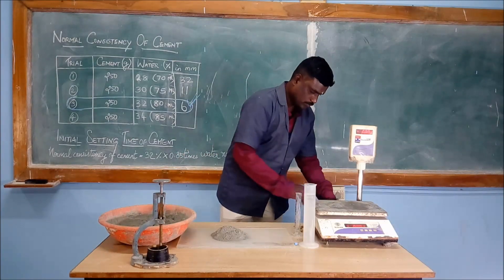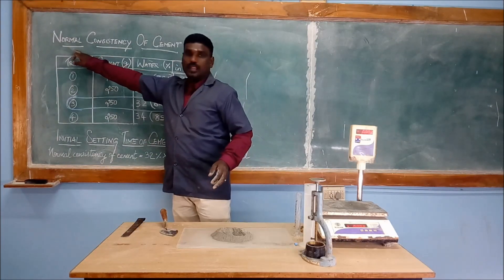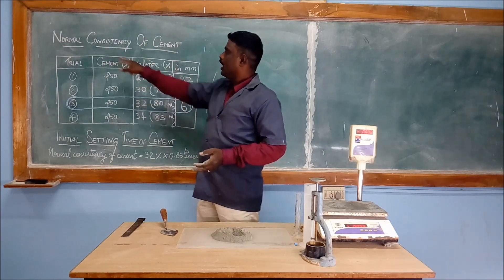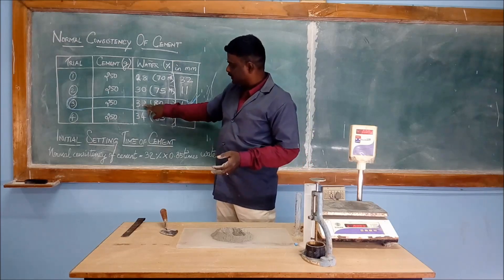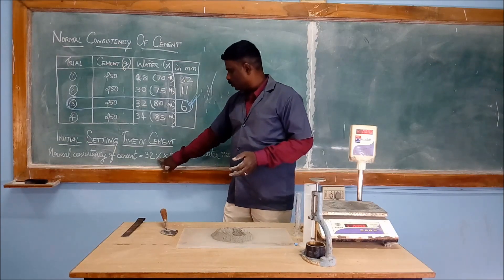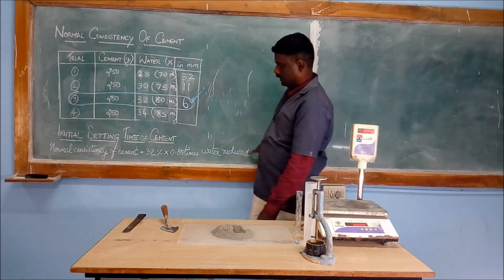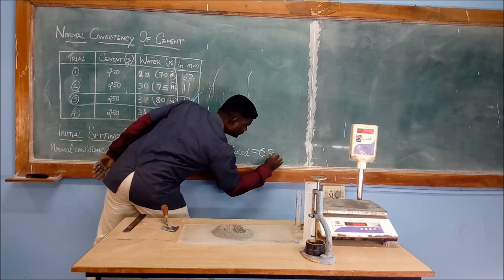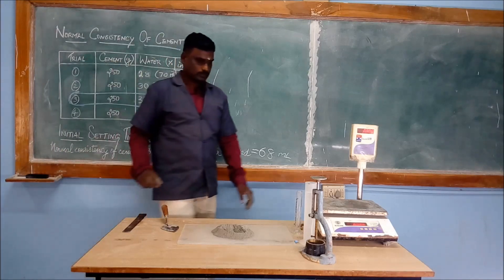After putting the cement, from the normal consistency of the cement which we have done in the last video, we are getting 32% of water at 6 mm penetration. So 32% of water is to be added, but into 0.85 times, the water is reduced. So we are going to add 68 ml of water to find out the initial setting time.